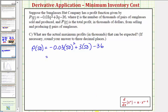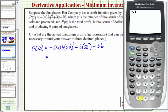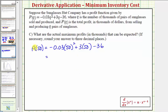And now we'll go to the calculator. Negative 0.03 times 50 squared plus 3 times 50 minus 36. So P of 50 equals 39. So P of 50 equals 39. But remember, P of Q is in thousands of dollars. So the maximum profit is not $39, but $39,000.